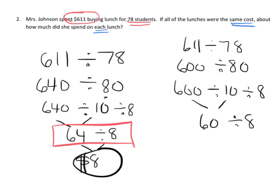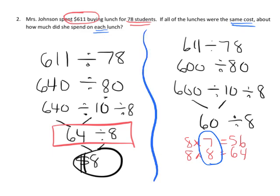So we know 8 times 7 is 56, and we know that 8 times 8 is 64. So we could say, eh, we know that the answer is somewhere between 7 and 8 dollars per lunch. That's a different way to estimate the same problem.